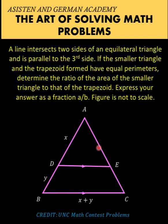This means that the length of segment AE must also be X, and consequently the length of segment EC must be Y. The length of segment DE is the same as AD and AE because our small triangle is an equilateral triangle.